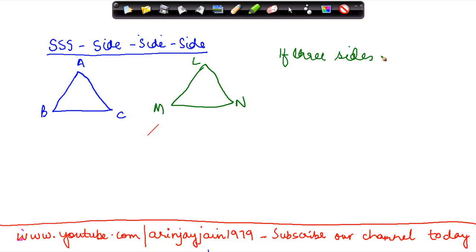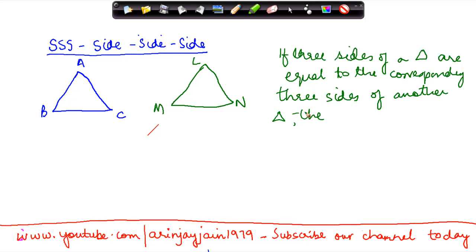If three sides of a triangle are equal to the corresponding three sides of another triangle, then the two triangles are said to be congruent. Now, what does this mean? Let us say,